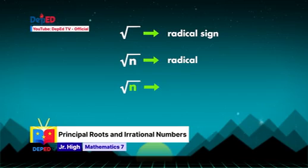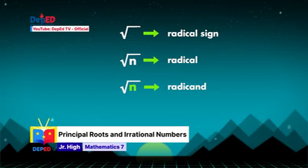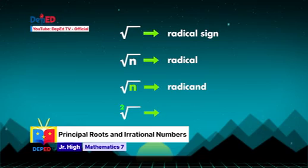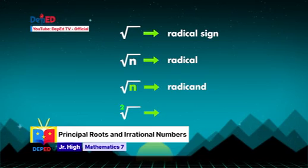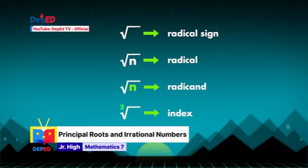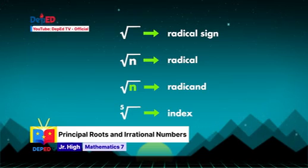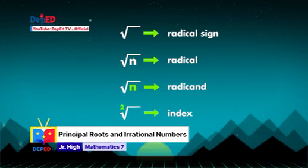The number under the radical sign is known as the radicand. In this symbol, there is an invisible number 2, which indicates that we are getting the square root of the radicand. This number is known as the index. The index can also be 3, 4, 5, and so on. If our index is 2, no need to write it.